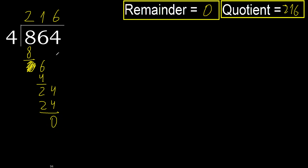0. Therefore 864 divided by 4 is here — the answer is 216.